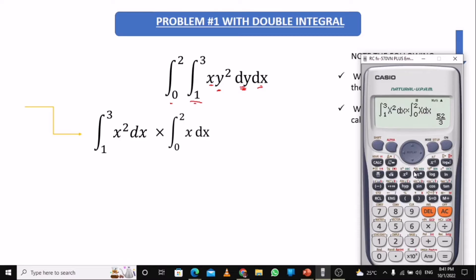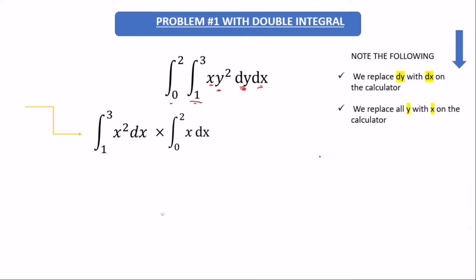So the answer we're supposed to get is 52 over 3. To recap: replace all dy with dx and all y with x on the calculator. That's why here the interval from one to three has y squared dy, which we change to x squared dx. Then the second part is x dx with interval from zero to two, which we input on the calculator to get our answer.